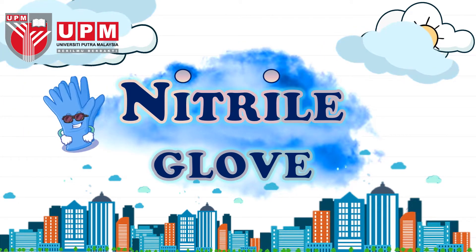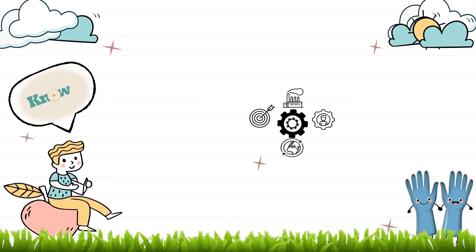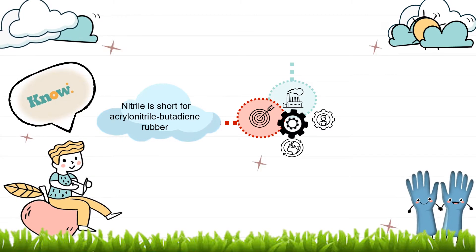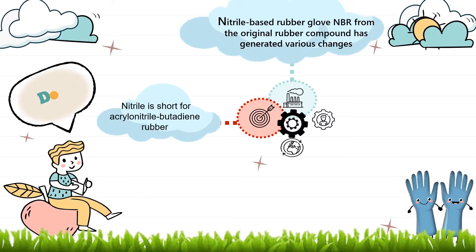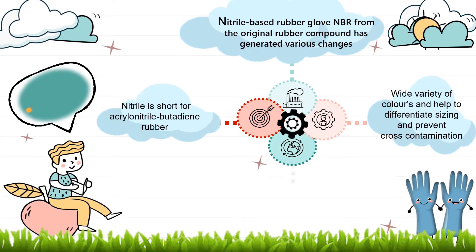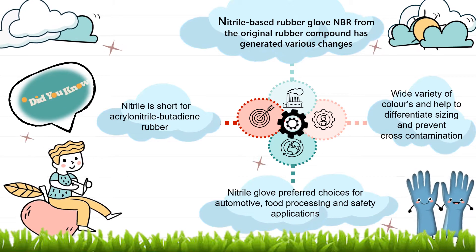Welcome to the life cycle product of nitrile glove. Nitrile is short for acrylonitrile butadiene rubber. Nitrile based rubber, or NBR, are from the original rubber compound and has generated various changes. This glove also has a variety of colors and helps to differentiate sizing and prevent cross-contamination. It is also preferred for automotive, food processing, and safety applications.